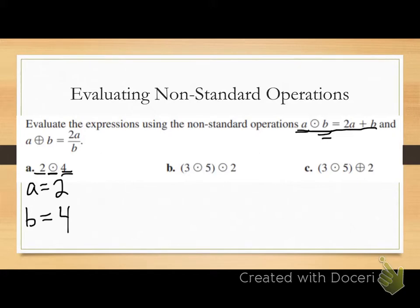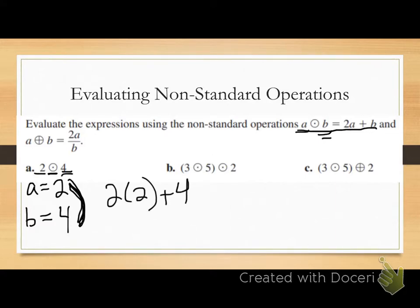Now I'm just plugging these two numbers into my operation 2a plus b. So, 2 times 2 plus 4. Now it's just an expression that I need to evaluate. I'm using my order of operations. Multiplication comes before addition, so I'm going to do 2 times 2, which is 4. And now I have 4 plus 4, which gives me 8. That would be my answer for letter a.